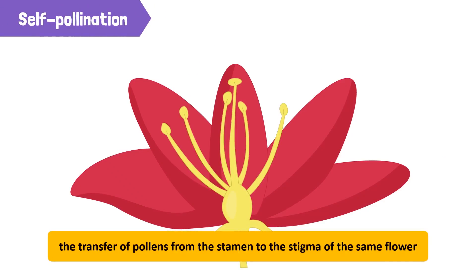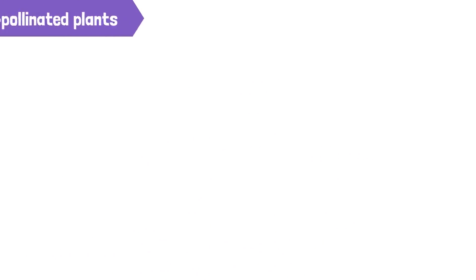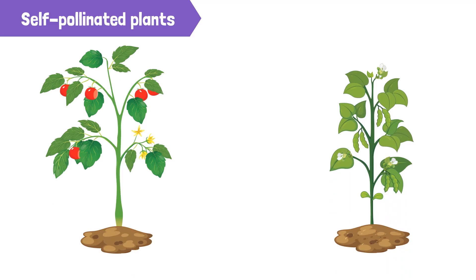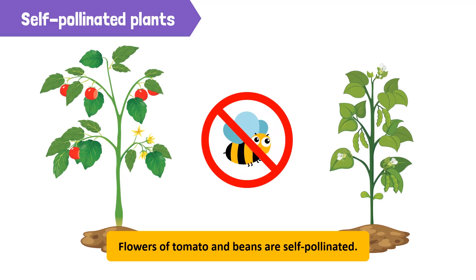The transfer of pollen from the stamen to the stigma of the same flower is called self-pollination. In these types of self-pollinating flowers, for example those of peas and tomatoes, a pollinator is not required. A pollinator is an animal, like a bee, that carries pollen between flowers.